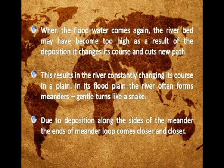When flood water comes again, the river bed may have become too high as a result of deposition, so it changes its course and cuts a new path. This results in the river constantly changing its course in a plain. In its flood plain, the river often forms meanders — gentle turns like a snake.